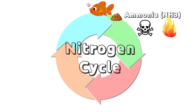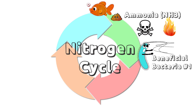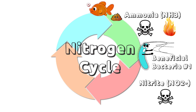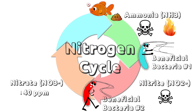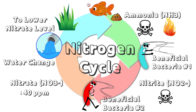Ammonia is introduced when we feed our fish. Our fish will poop and create ammonia, which is toxic and caustic. With the help of beneficial bacteria number one, the ammonia is oxidized and converted into nitrite. Beneficial bacteria number two then oxidizes the nitrite and converts it into nitrate, which is much safer as long as it does not exceed 40 parts per million. That is why we do water changes to lower the nitrate level, and then we feed our fish again and the cycle continues.